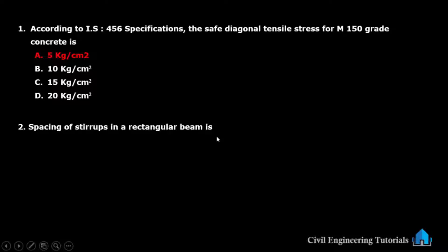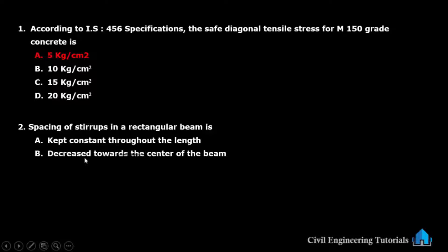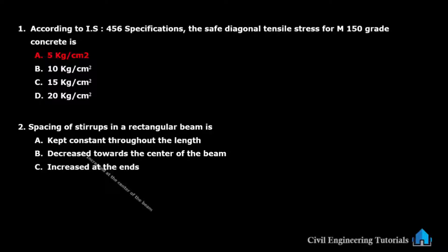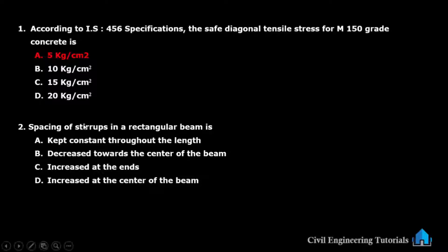Next question: spacing of stirrups in a rectangular beam — option A: kept constant throughout the length, option B: decrease towards the mid-span, option C: decrease towards the center of the beam, option D: increased at the center of the beam. The answer is option D — spacing of stirrups in a rectangular beam is increased at the center of the beam.